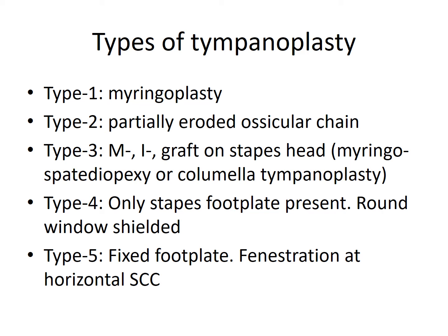In Type 4, only the Stapes Footplate is present and functional — the superstructure is absent, Malleus is absent, Incus is absent. So the Stapes Footplate is exteriorized to the external ear and the Round Window is closed with a graft — this is called Round Window Shielding Effect. In this condition, the sound from the external ear will directly hit the Oval Window, so there is acoustic separation between the two windows. This type of Tympanoplasty is therefore also called the Round Window Shielding Effect.